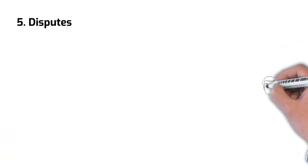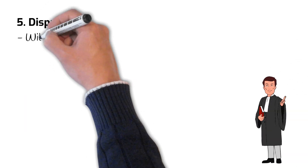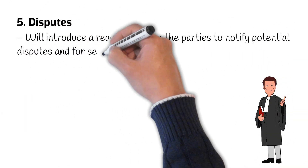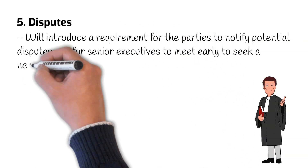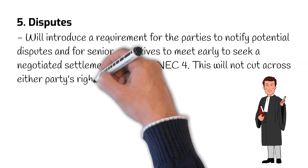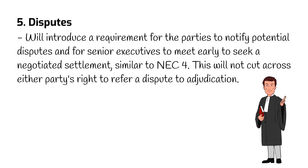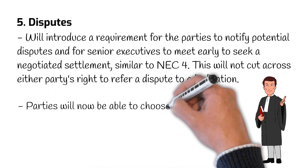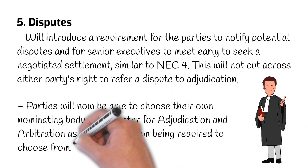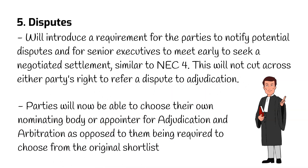Number 5: Disputes. The new editions will introduce a requirement for the parties to notify potential disputes, and for senior executives to meet early to seek a negotiated settlement, in an approach similar to what is set out in NEC 4. Importantly, this will not affect either party's right to refer a dispute to adjudication at any time. Parties will now be able to choose their own nominating body or appointer for adjudication and arbitration, as opposed to being required to choose from the original shortlist.